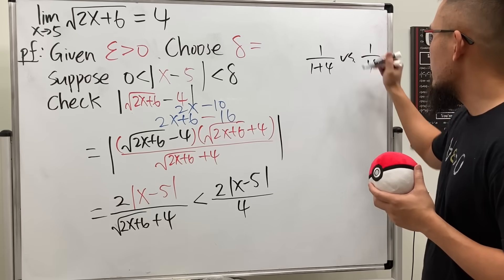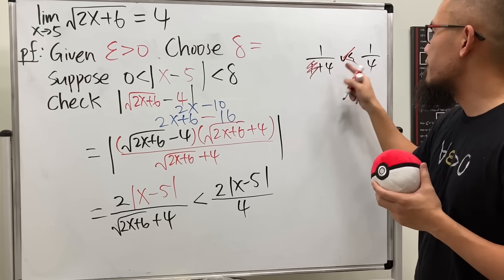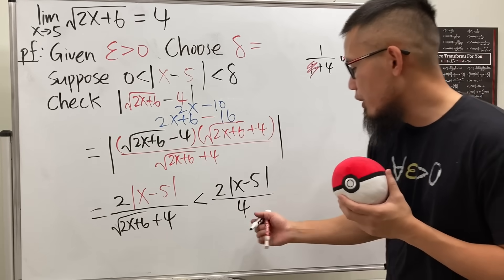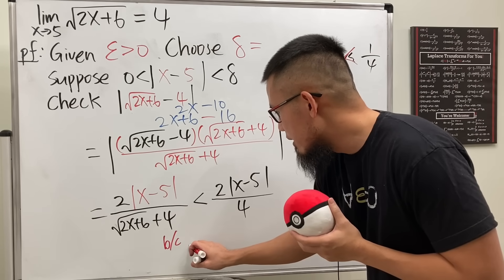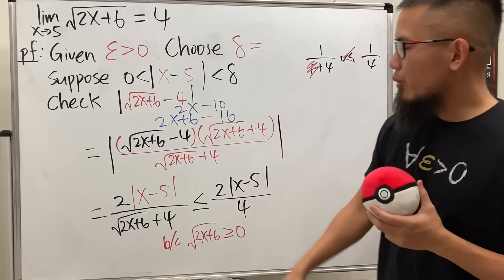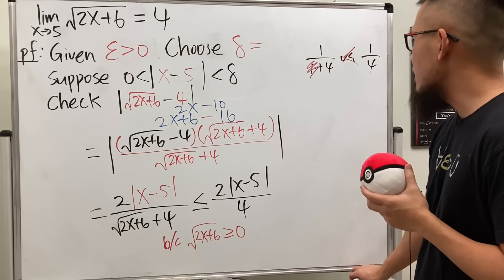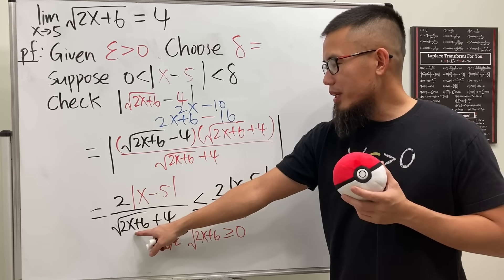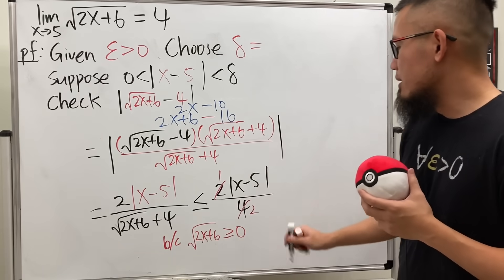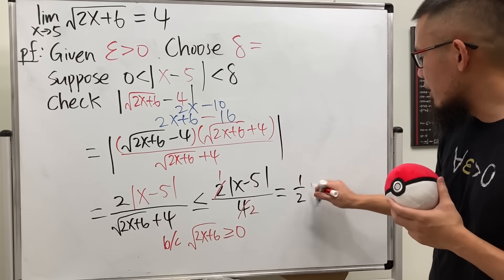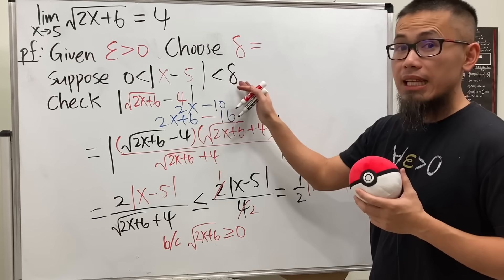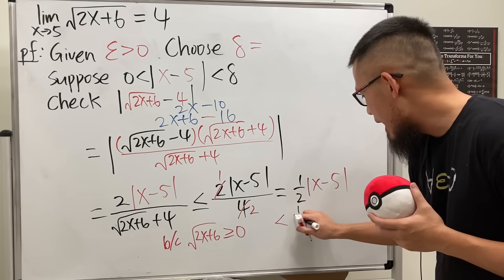To clarify why this inequality holds: 1/(1 + 4) is less than 1/4 because the extra positive term makes the denominator larger and the fraction smaller. So because √(2x+6) ≥ 0, we have this inequality (with ≤ to be precise). Simplifying 2/4 gives 1/2, so we have (1/2)|x - 5|. Since |x - 5| < delta, this whole expression is less than (1/2)·delta.